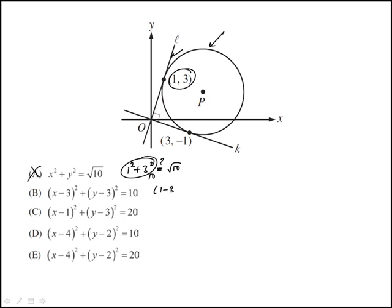This would be (1 - 3) squared plus (3 - 3) squared, that's 4, because this would be 0. Again, this one is out.